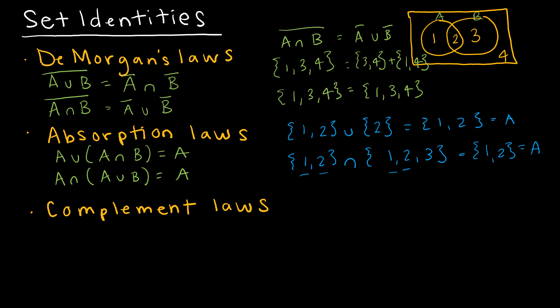The complement laws: A union not A should be everything in your universe, and A intersect not A should be the empty set — there's nothing that A and its complement have in common.